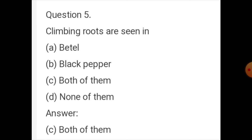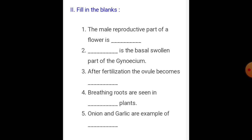Now the fill in the blanks section. The male reproductive part of a flower is the androecium. The basal swollen part of the gynoecium is the ovary.